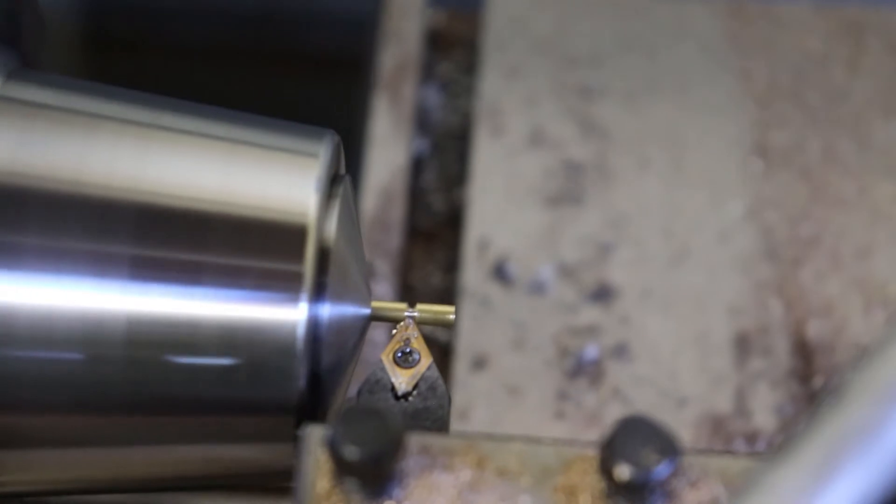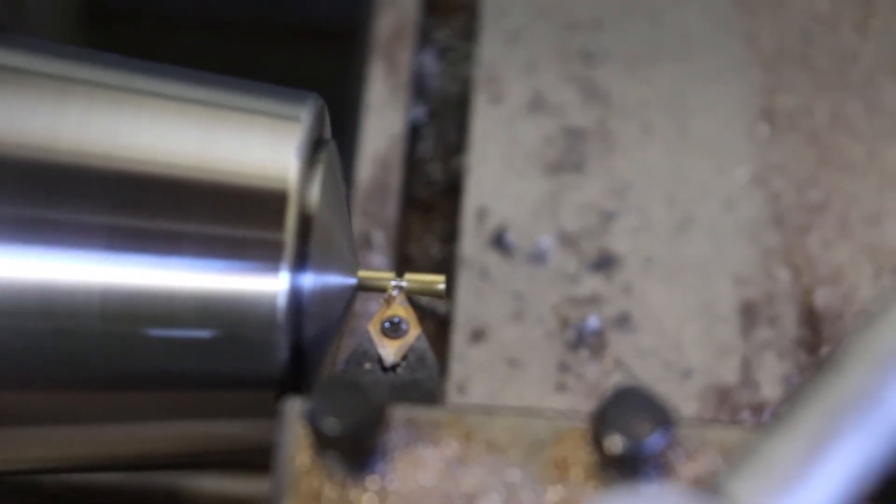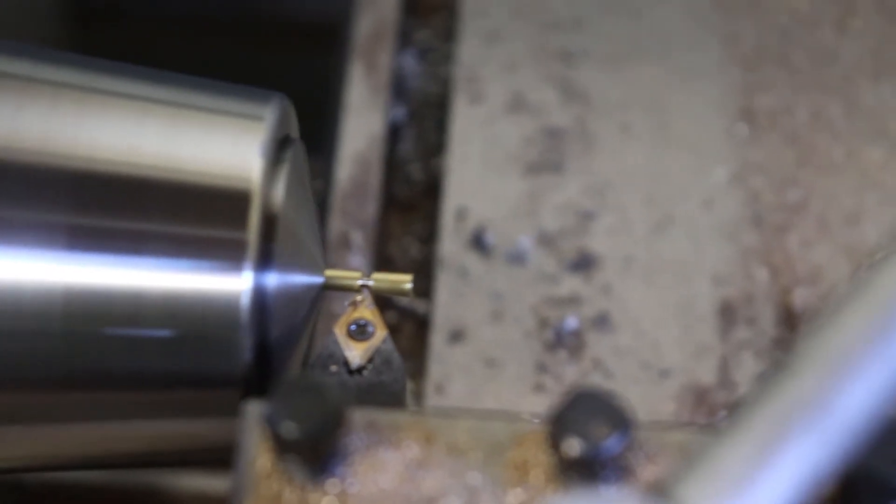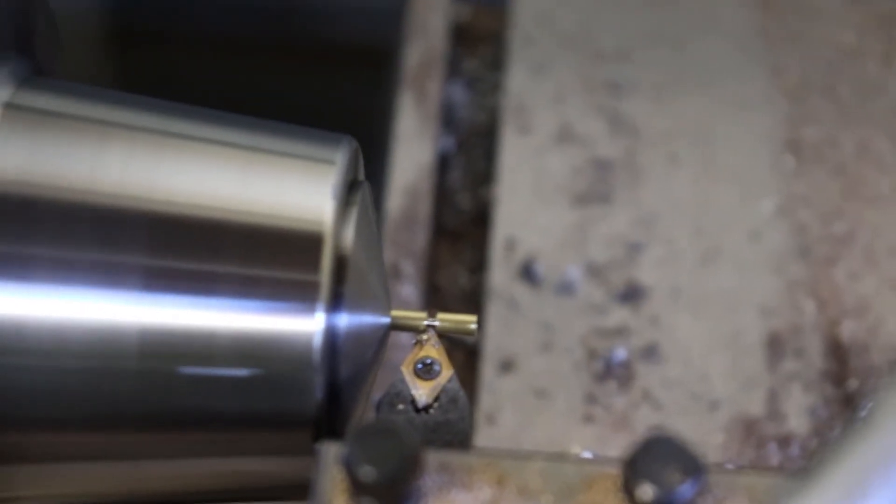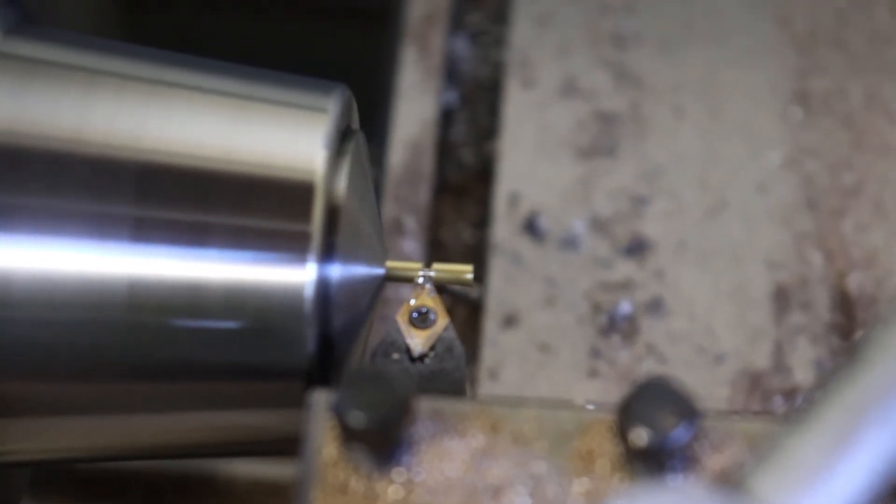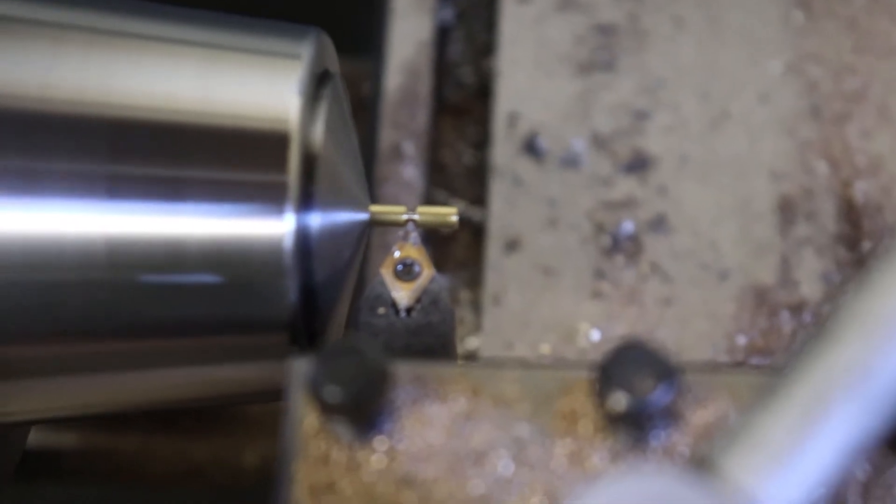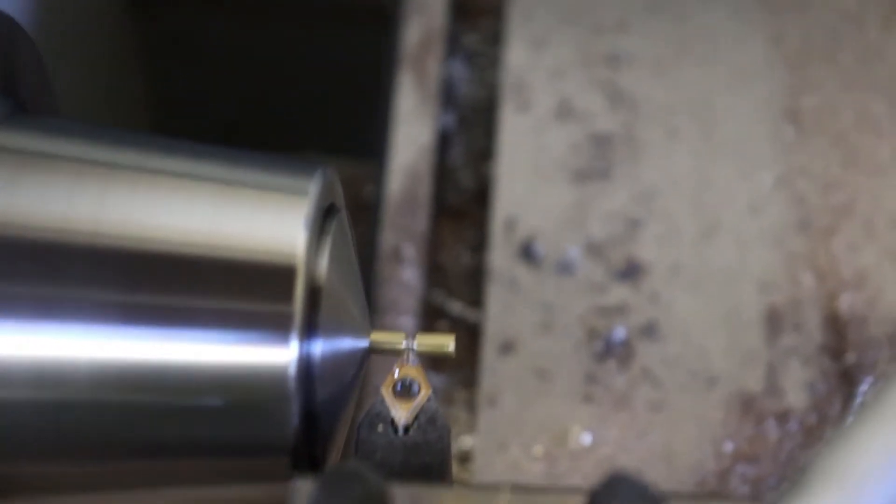I wish my cutoff tool for my lathe wasn't broken. This would be so much easier with that, but you get the general idea. I face off one side, cut an oversized piece, pop it in the collet chuck the other way, and then I face it off again, remove it from the chuck, measure it, then finally cut it to size. One of these days, I'm going to get one of those really fancy CNC lathes with the sub-spindles and everything, and it's just going to make it so much easier for me.